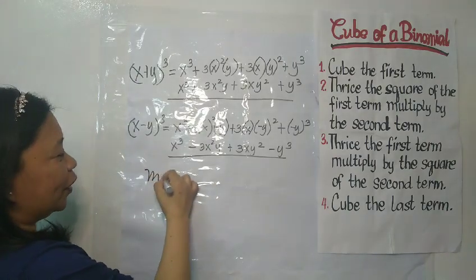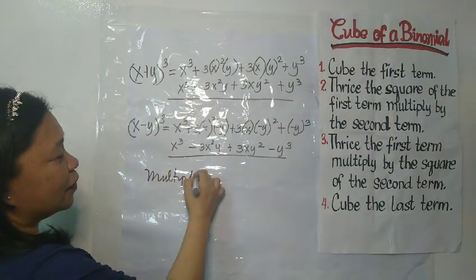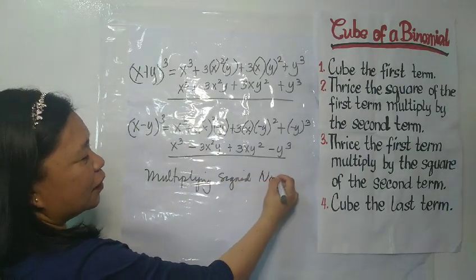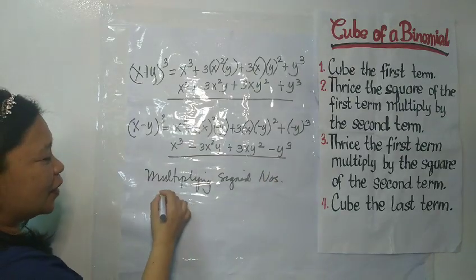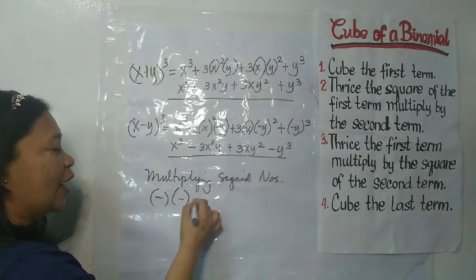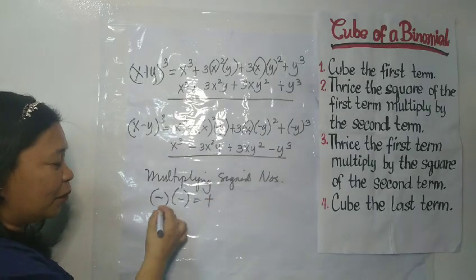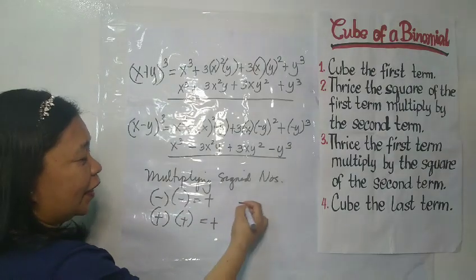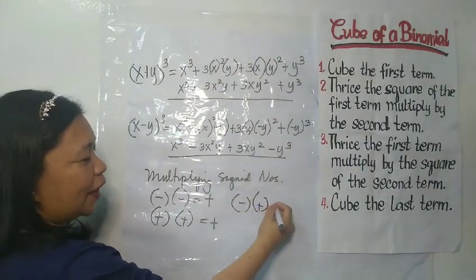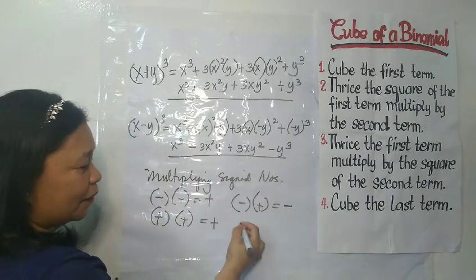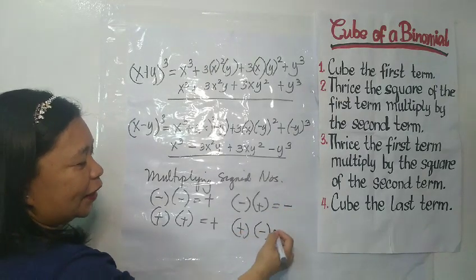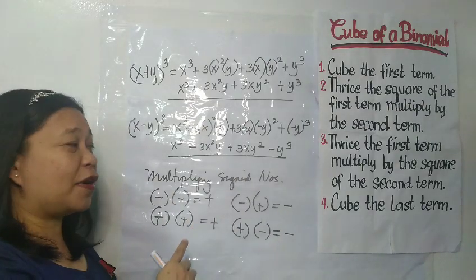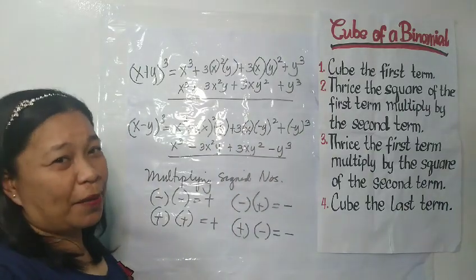Remember, when multiplying signed numbers: negative multiplied by negative, the answer is positive. Positive multiplied by positive, the answer is positive. Negative multiplied by positive, the answer is negative. And positive multiplied by negative, the answer is negative. Always remember the rules for multiplying signed numbers when solving the cube of a binomial.